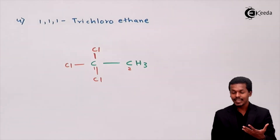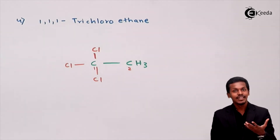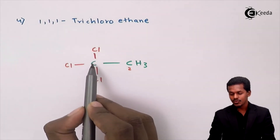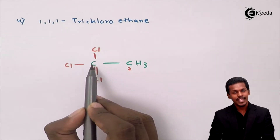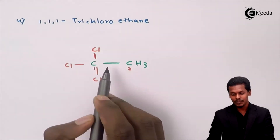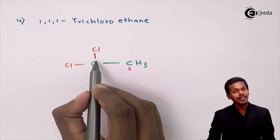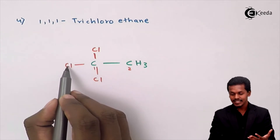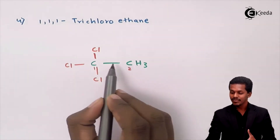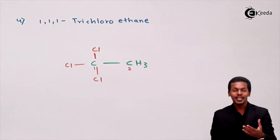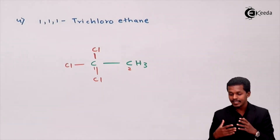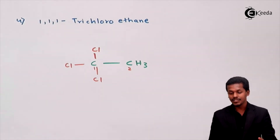Now let us classify this compound. The chlorine atoms are attached to a carbon atom that is bonded to only one other carbon — making it a primary carbon atom. So all three halogens are on a primary carbon. Therefore this is a trihalogen derivative of alkane consisting of a primary alkyl halide.